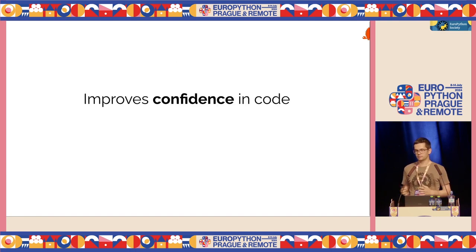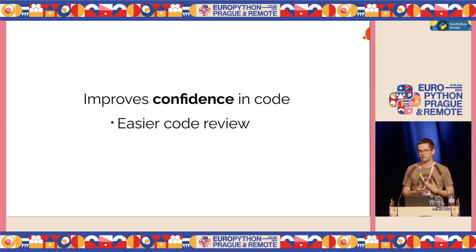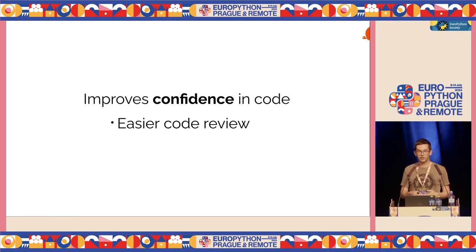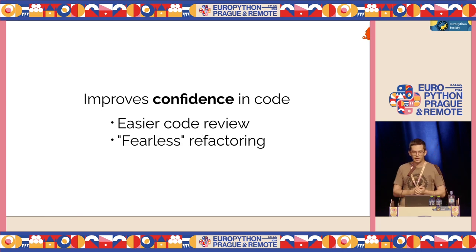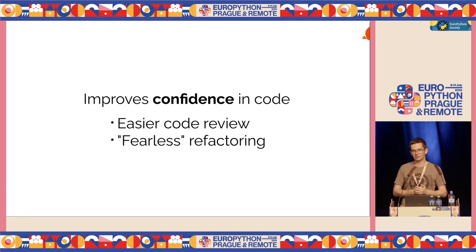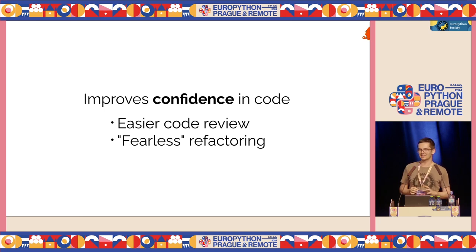To sum up the type hints discussion: using type hints improves the confidence I have in my code, and that is really a great feeling. It also improves my confidence in other people's code — when I see they are using type hints and there's a type checker in CI, I have much more confidence about their code. And it helps me when I refactor and change my code. I put 'fearless' in quotes because in Rust, refactoring is really fearless. In Python, even with type hints, it's not so perfect — but type hints still help me a lot when I need to change my Python code.